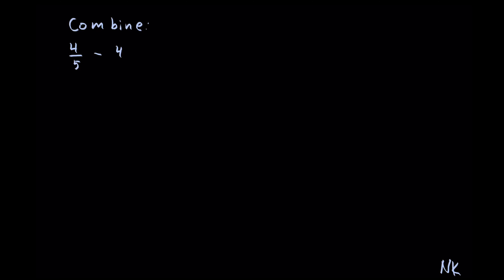Here we have to combine 4 out of 5 minus 4. 4 is a whole number, which means it's out of 1. We have two denominators, 5 and 1, so our LCD is equal to 5. We need to change the second denominator, so I need to multiply this 1 by 5 in order to create 5 in the denominator. So whatever I'm going to do in the denominator, I'm going to do the same thing in the numerator. This gives us 4 out of 5 will stay the same, minus the second fraction will have 5 in the denominator now. In the numerator we will have 4 times 5, which is 20.